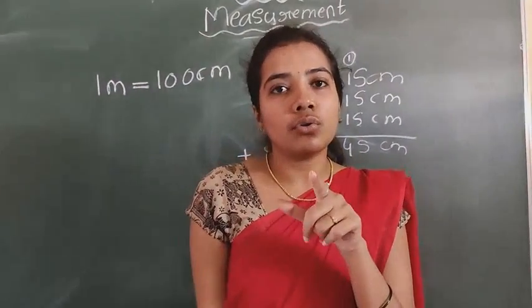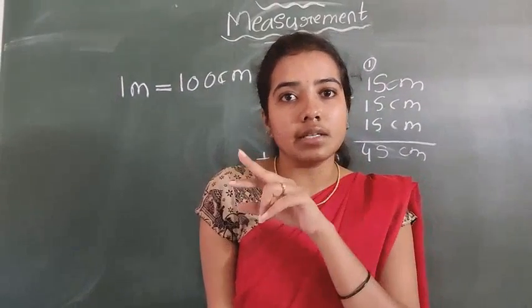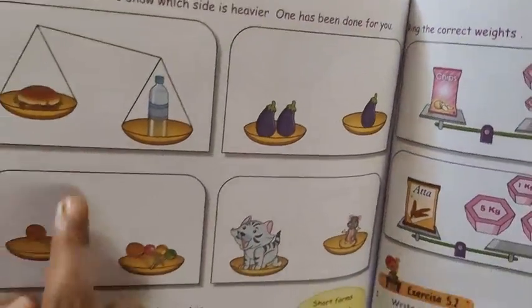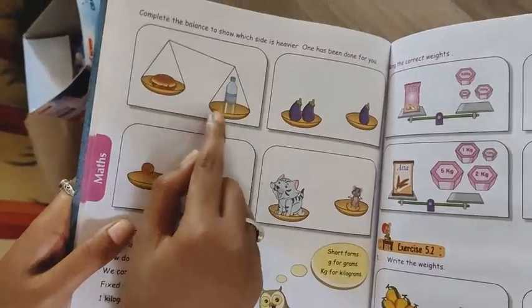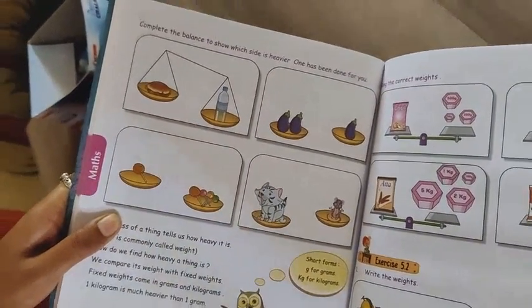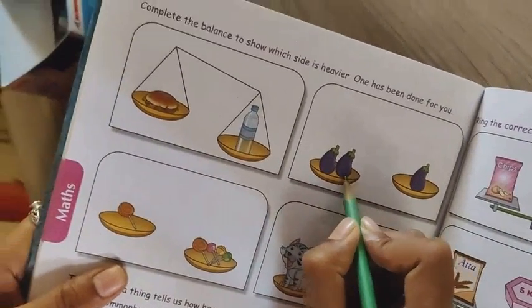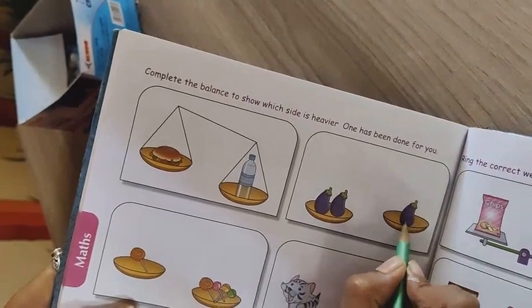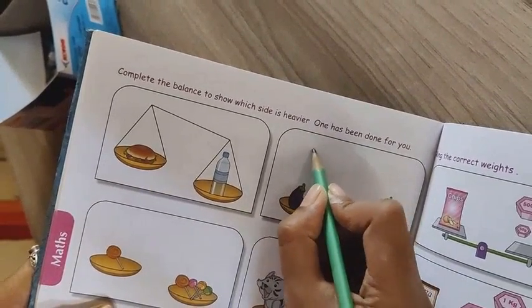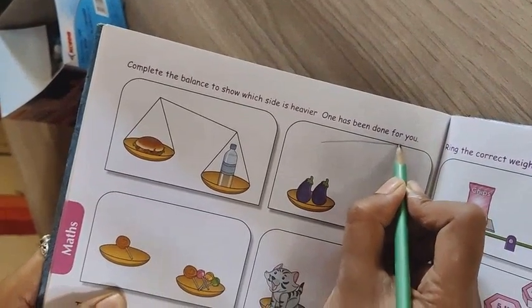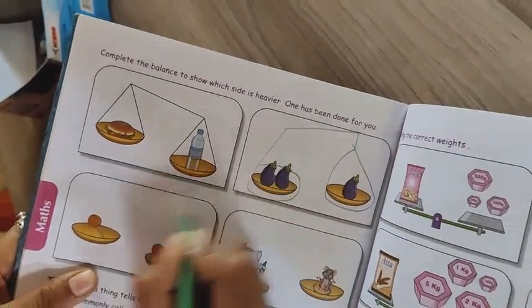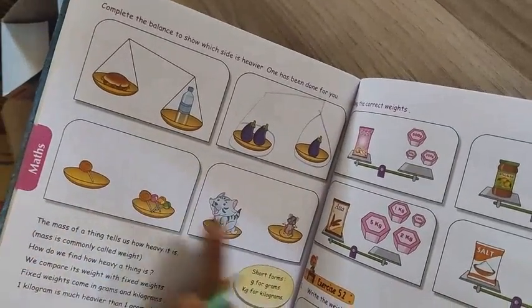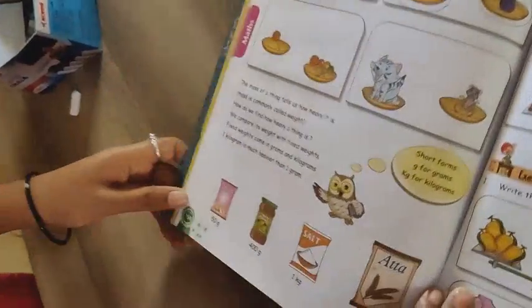For milk — if I told you to bring milk, milk will come in litres. They have some equipment. See here — the burger is lighter than the bottle. They have drawn it like this. You also have to draw. This is the heavier side because two brinjals are there, and one brinjal is lighter. So you have to draw the balance like this.